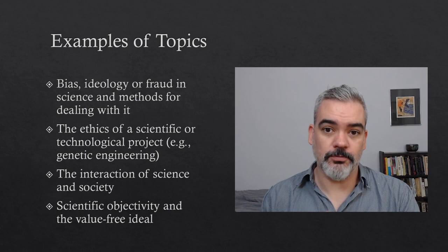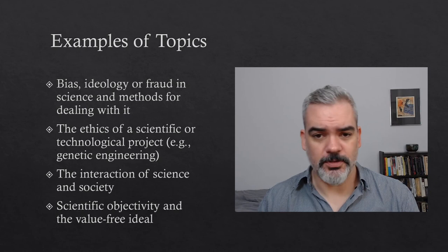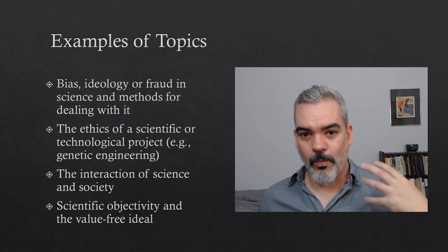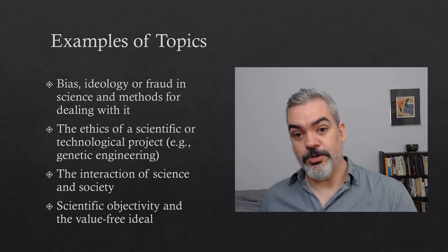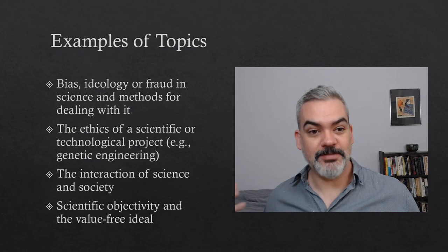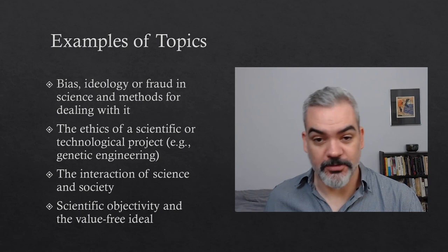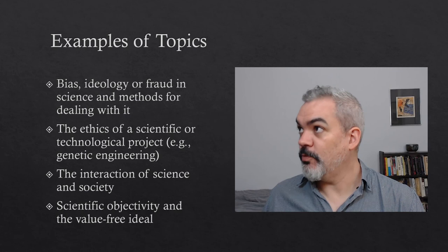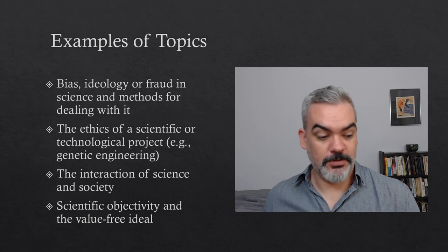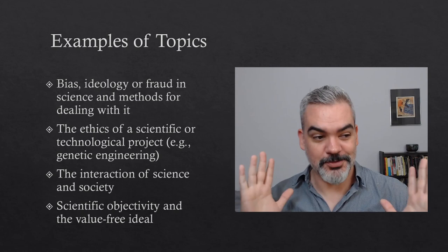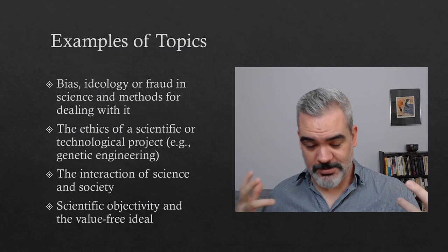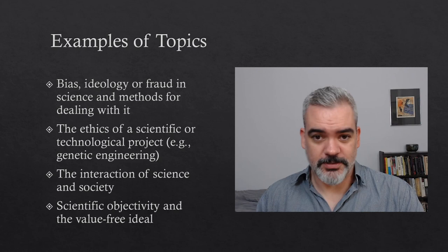You could write about the ethics of a scientific or technological project. After reading week, we'll talk about genetic engineering, the ethics of AI, and the ethics of geoengineering — topics where we're asking what is the moral or ethical way to apply some theory or technology. Very broadly, the interaction of science and society is also fair game — topics like scientific racism, and the ways science and society interact in dense ways. There's a whole field of science and technology studies that does basically this approach, looking at how social and scientific issues interact.